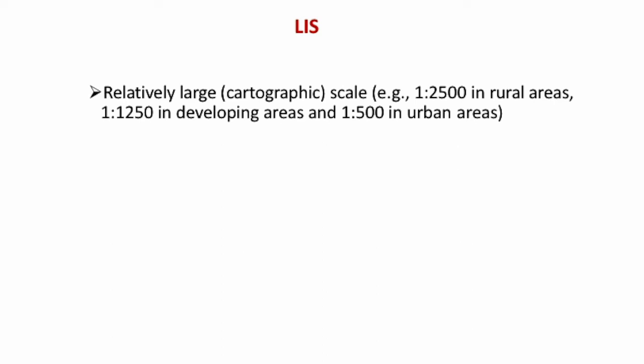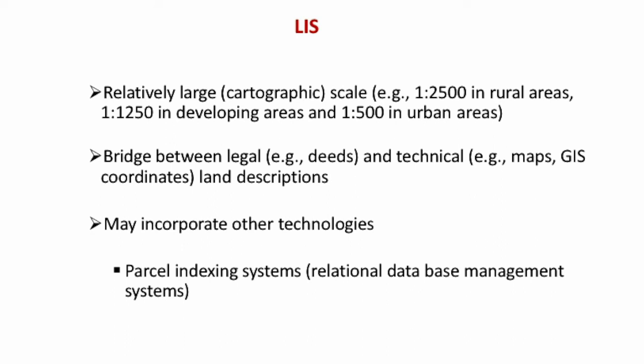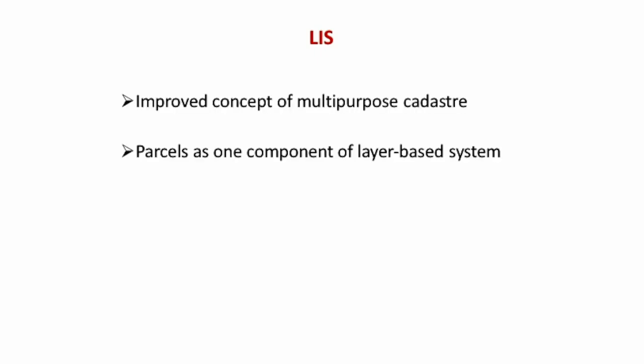LIS typically uses large-scale mapping: 1:2500 in rural areas, 1:1250 in developing less-urban areas, and 1:500 in urban areas. It forms a bridge between the legal deed and the technical map. It may incorporate other technologies such as parcel indexing systems, relational database management systems, and surveying, to provide better service, improve the concept of multi-purpose cadastre, and use parcel as one component of a layer-based system.